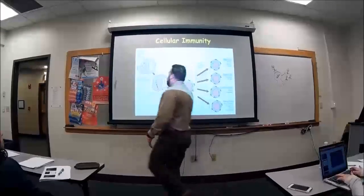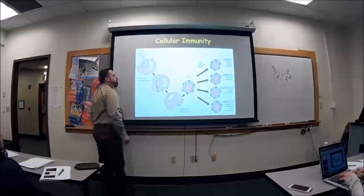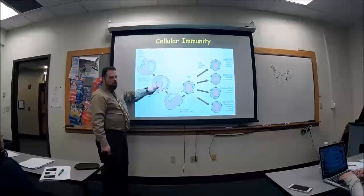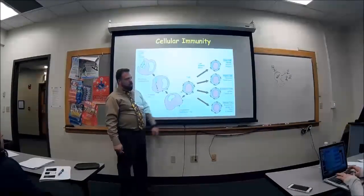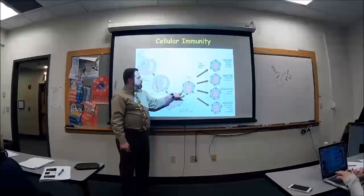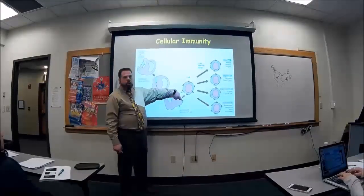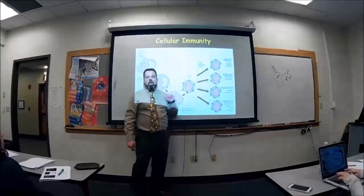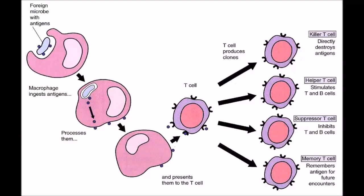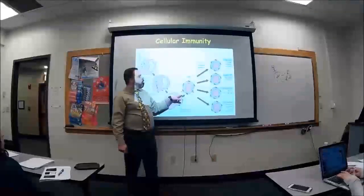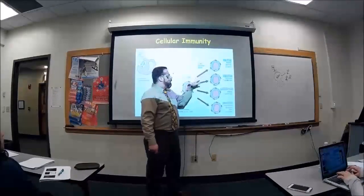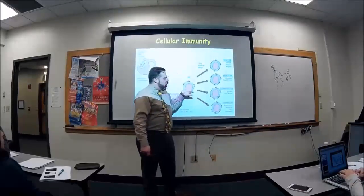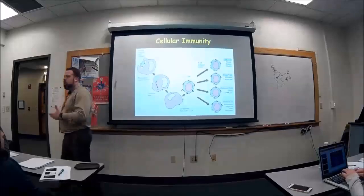We also have memory T cells — they remember the antigen, and the second response is much faster than the first. In this case, here's your macrophage — it's going to engulf the bacteria, break it all up, and there's going to be a piece of the antigen that stays there. We have a T cell that's going to bind over here, making the connection. The innate system needs to talk with the acquired system, and once the connection happens, this cell can make a killer T cell, a helper T cell, a suppressor T cell, or a memory T cell.